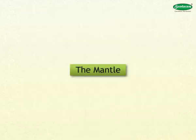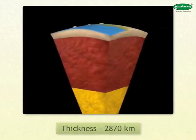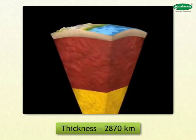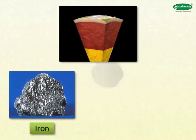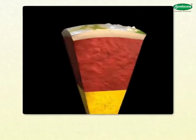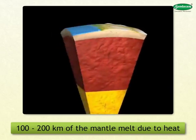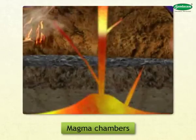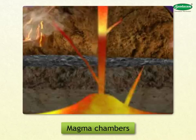The mantle is the layer below the crust. Its thickness is about two thousand eight hundred and seventy kilometers. It consists of compounds of iron and magnesium. Rocks in the upper hundred to two hundred kilometers of the mantle melt due to heat. Due to the magma created in this layer, magma chambers are found in this part.